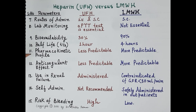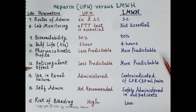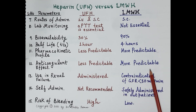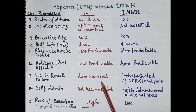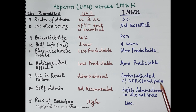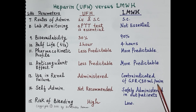Regarding pharmacokinetic profile: because unfractionated heparin binds to plasma proteins and other cells, its pharmacokinetic profile is less predictable, while it is more predictable for low molecular weight heparin. Similarly, the anticoagulant effect is less predictable for unfractionated heparin and more predictable for low molecular weight heparin. Regarding use in renal failure: unfractionated heparin can be administered, whereas low molecular weight heparin is contraindicated if the glomerular filtration rate is less than 30 mL per minute.